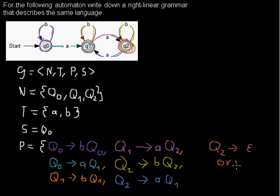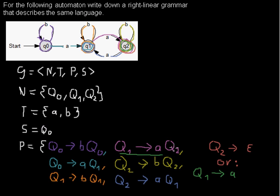If epsilon rules are not allowed, you can do something else. You take all rules where you move to q2 and handle it as if q2 would expand to empty. So for the rule q1 → a q2, you add the rule q1 → a, imagining that q2 expands to the empty word — it's just the same as deriving to a in one step. The other rule where q2 appears on the right-hand side is q2 → b q2, so for that you would add q2 → b.